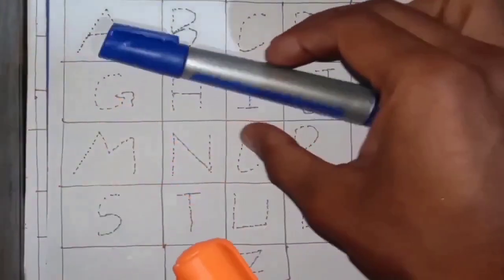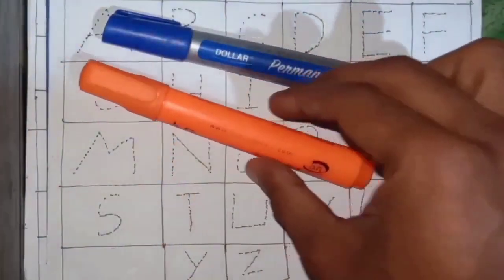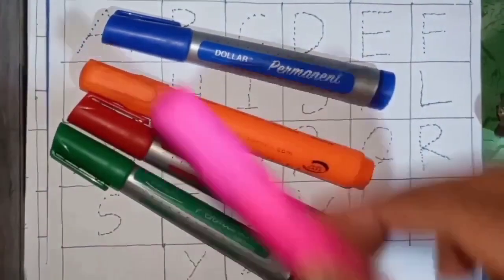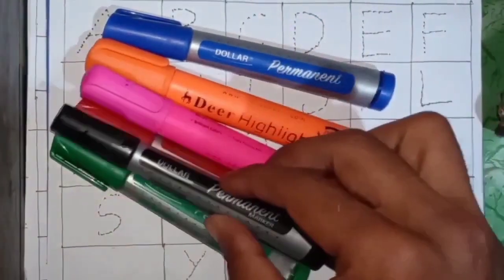Colors name: blue color, orange color, red color, green color, pink color, black color.